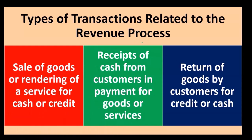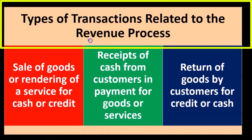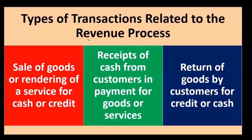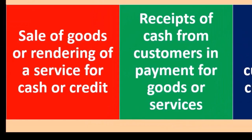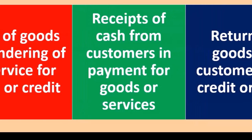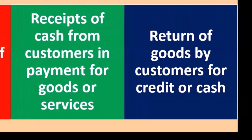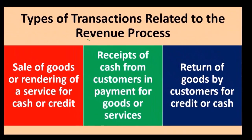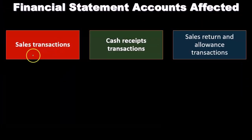What are the accounts we'll be considering with regard to the revenue process? Our main account is of course revenue, but as we test revenue we'll also be testing some other items. That can be a good thing — as we go through the testing process and these accounts, we'll be testing other types of accounts along the way, which means we can possibly do less testing once we get to those accounts individually.